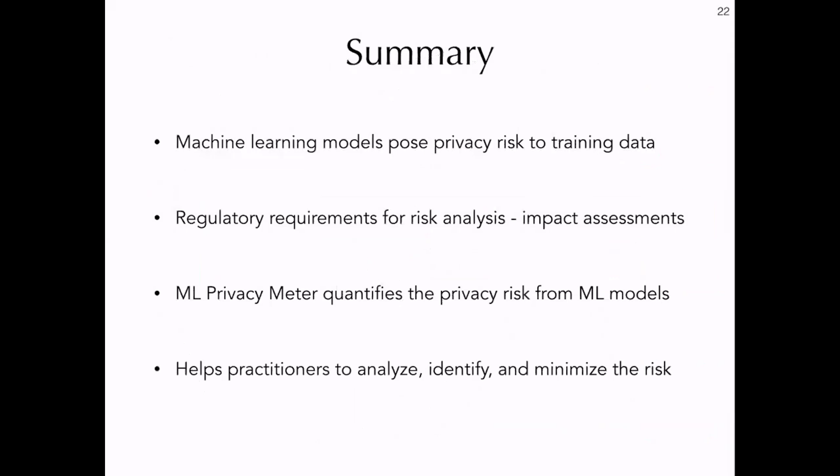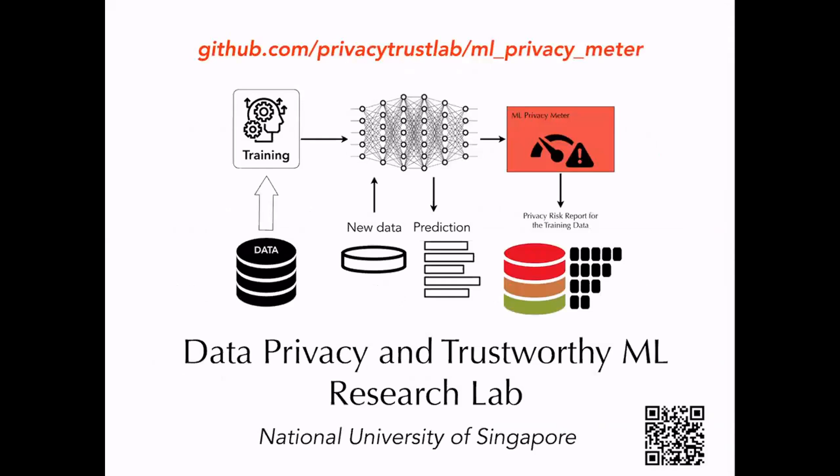To summarize, machine learning models pose an additional privacy risk to training data in AI systems by indirectly revealing about it. To satisfy regulatory requirements, organizations should assess these privacy risks. ML Privacy Meter quantifies this privacy risk and helps practitioners in compliance by letting them analyze, identify, and minimize the potential privacy risk to data. By permitting models with better utility, the tool can boost adoption of privacy enhancing techniques in machine learning. The tool is publicly available at the GitHub link shown, with tutorials and guidelines on simulating attackers with different capabilities. Please check it out and feel free to contact us with questions and suggestions. Thank you.